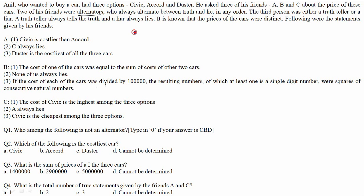An alternator is basically someone whose first statement will be true, then second false, then third true — or first false, second true, third false. For example, true-true-false would NOT be an alternator. Similarly, true-false-false would also not be an alternator. An alternator must strictly alternate: T-F-T or F-T-F.